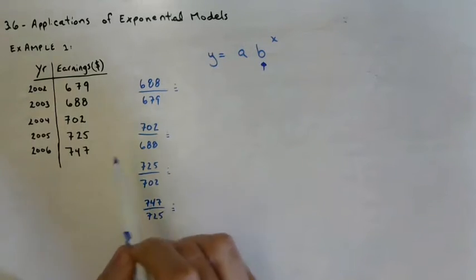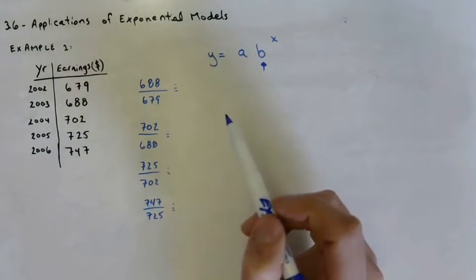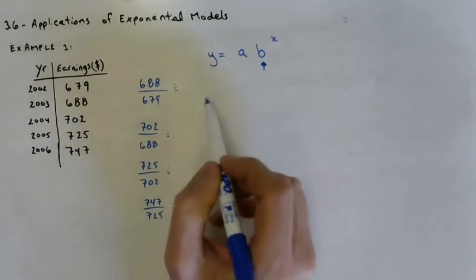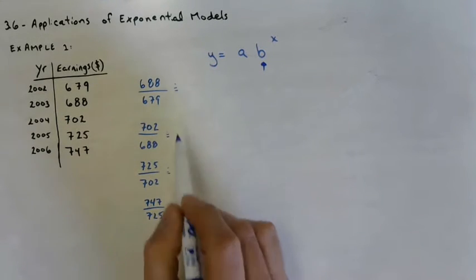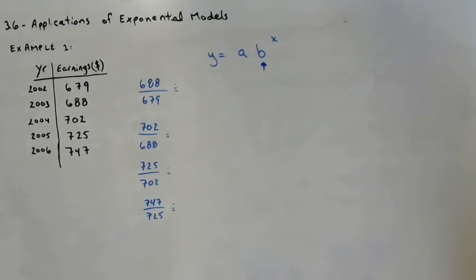While the real world data isn't going to perfectly fit an equation, it's going to be modeled by. The equation is going to approximate. So we're going to get all of the different, these are all going to be slightly different, although really close to the same. And then from that, we're going to choose an average to be our growth factor.